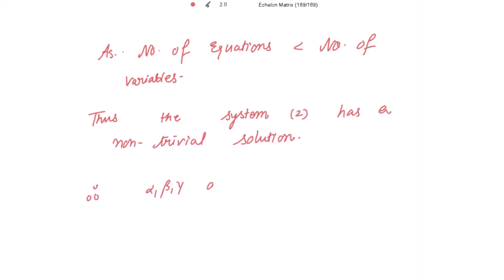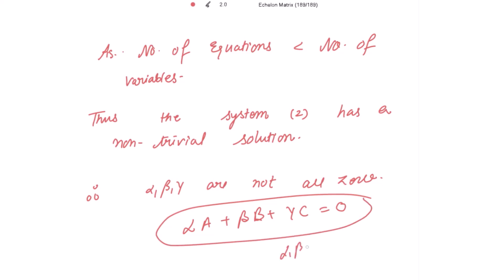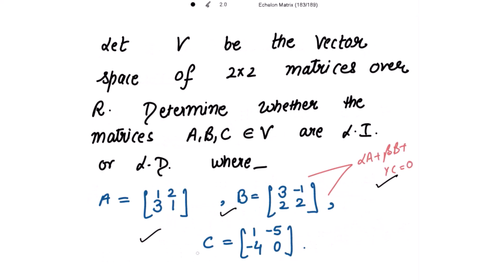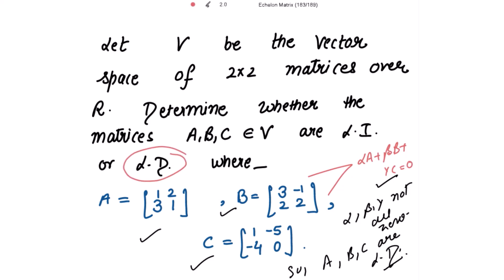Therefore, alpha, beta, gamma are not all zero, which means for the linear combination αA + βB + γC = 0, the scalars are not all zero. When the scalars are not all zero for this linear combination, we say that A, B, C are linearly dependent. If alpha, beta, gamma were all zero, that would be the condition for linear independency. Hence, A, B, C are linearly dependent — L.D. (linearly dependent), as opposed to L.I. (linearly independent). So the matrices are linearly dependent.